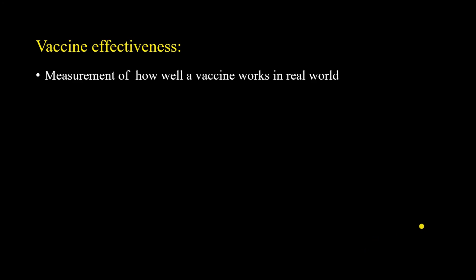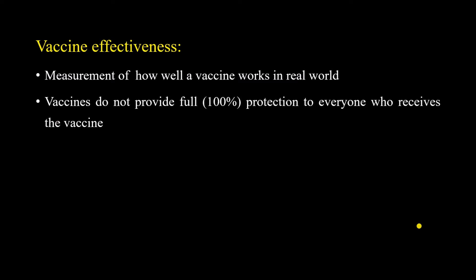Next is vaccine effectiveness, which is basically the measurement of how well a vaccine works in a real-world situation. We have to understand that vaccines do not provide full or 100% protection to everyone who receives the vaccine, and because of that, breakthrough infections can occur. Even after a certain number of people receive the vaccine, some of them may still develop the disease — there are certain factors for which a vaccine may fail or work sub-optimally.